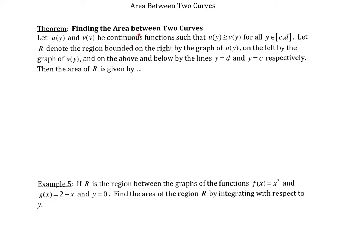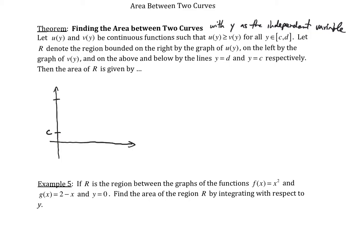Let's talk about finding the area between two curves with y as the independent variable. Let me draw a set of axes — the y-axis and the x-axis. I'm going to label two points, c and d, on the y-axis. This is the line y equals d, and this is the line y equals c.